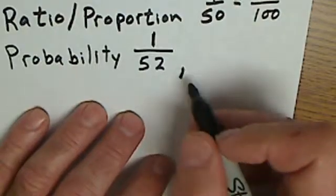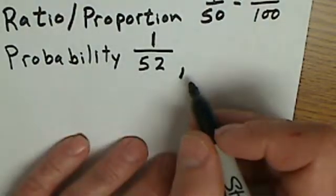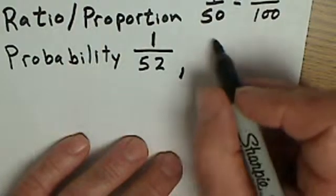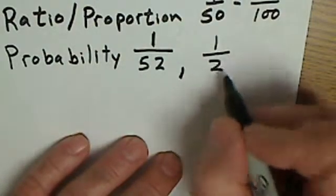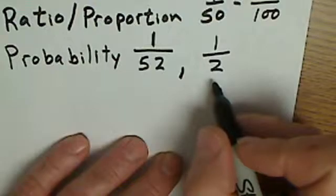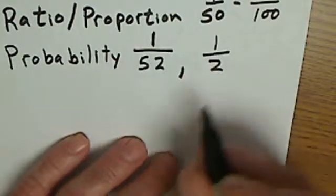Another example is if I take a coin and I flip it, what's the probability of getting heads? Well, there's only one head and two outcomes, heads or tails. So the probability of getting heads is one out of two.